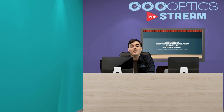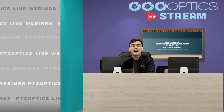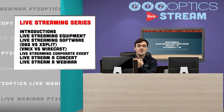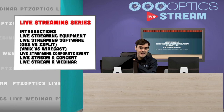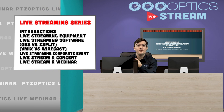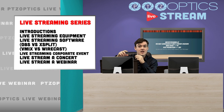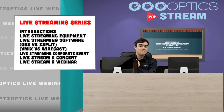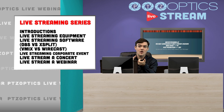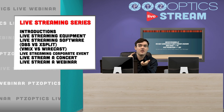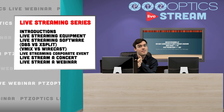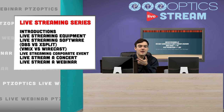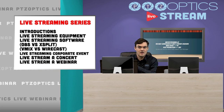So first of all let's talk about what we're going to introduce. This is the introduction video, then we're going to talk about live streaming equipment, live streaming software — and in that segment we're going to compare the main free live broadcasting softwares: OBS (Open Broadcast Software) and XSplit. Then we're going to talk about the two main paid premium solutions, which are vMix and Wirecast.